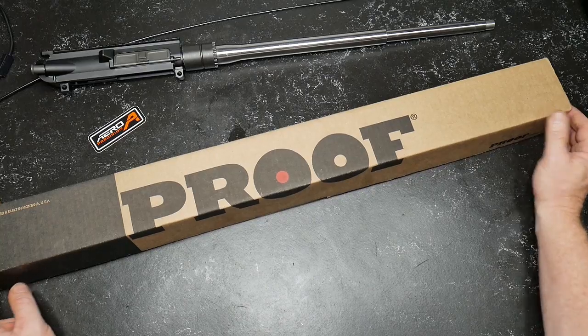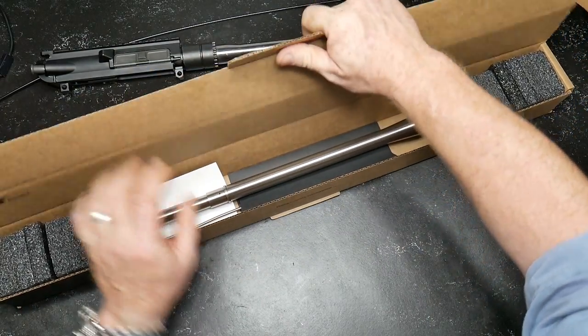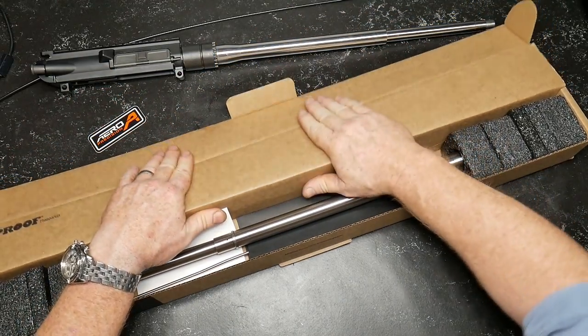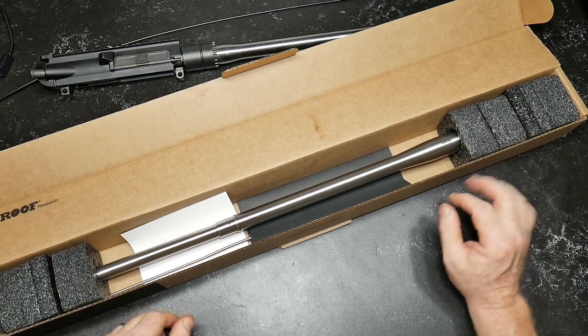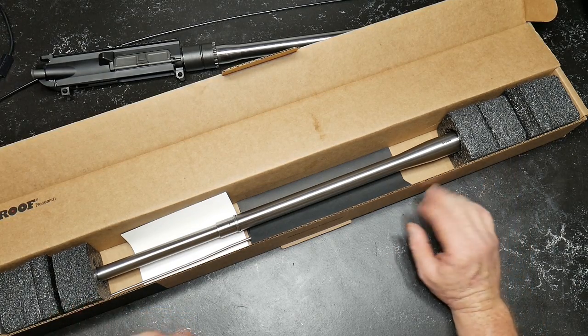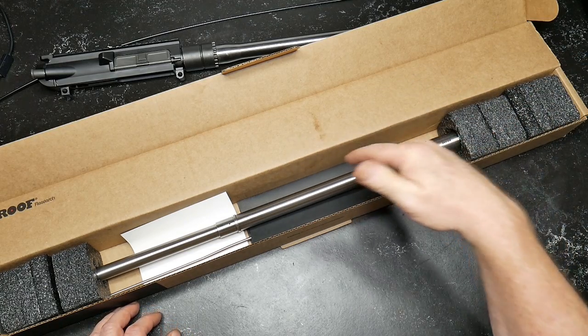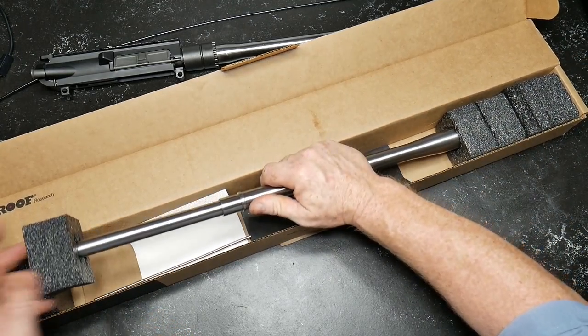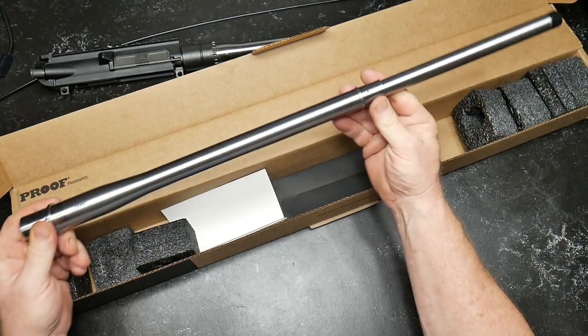So anyway, without further ado, this is the Proof barrel. This is their stainless steel version. The reason I went with a full-blown stainless steel version is I don't want to mess with the carbon fiber stuff. I know a lot of people say the carbon fiber helps it stay stable, the point of impact won't shift unless it's heated up. That's fine, but that's a real expensive barrel. You can get this guy right here, their stainless steel version, for around $479.